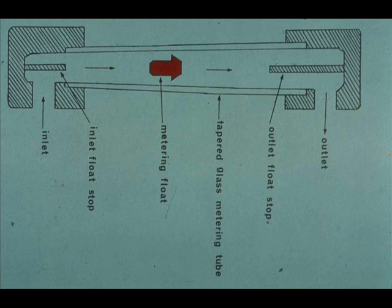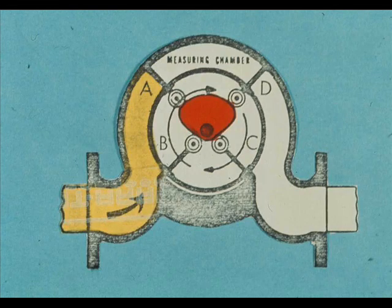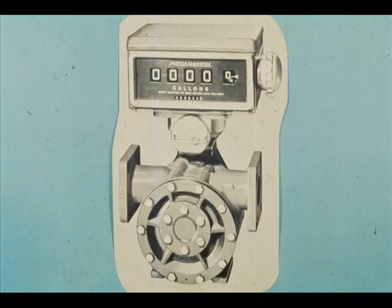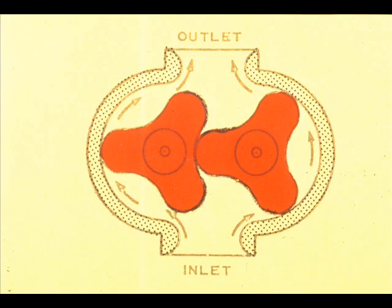We said that the rotometer operated on the principle of maintaining constant pressure drop across the float, by varying the annular open area between the float and the tube wall. We talked about the sliding vane meter, the use of positive displacement meters, and the lobe meter.